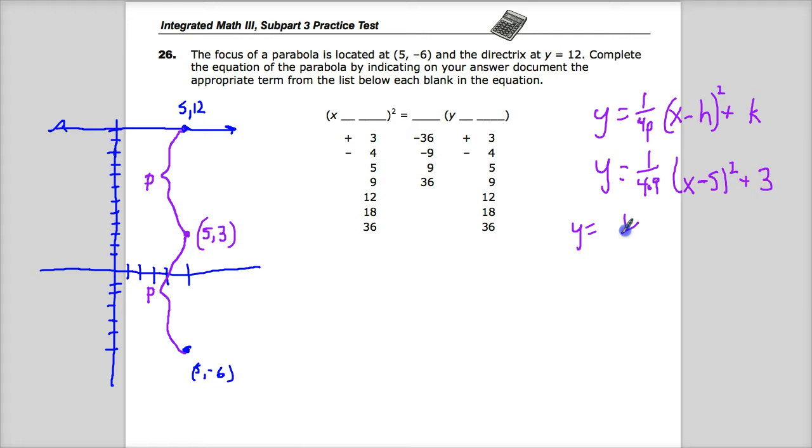So y is equal to 1 over 36, x minus 5 squared plus 3. And oh no, I realized I forgot something. If the focus is on the inside, this thing's going this way. So remember how the a would be negative if it was like that? This one's negative too.